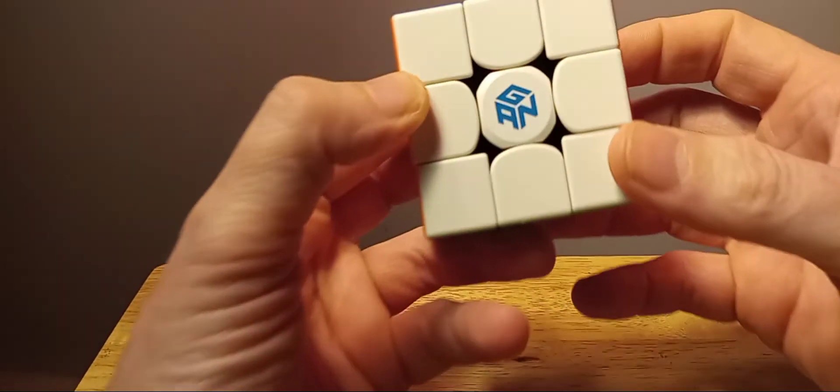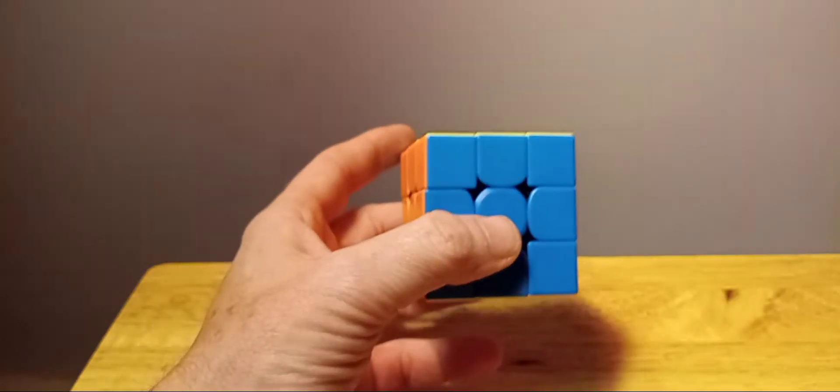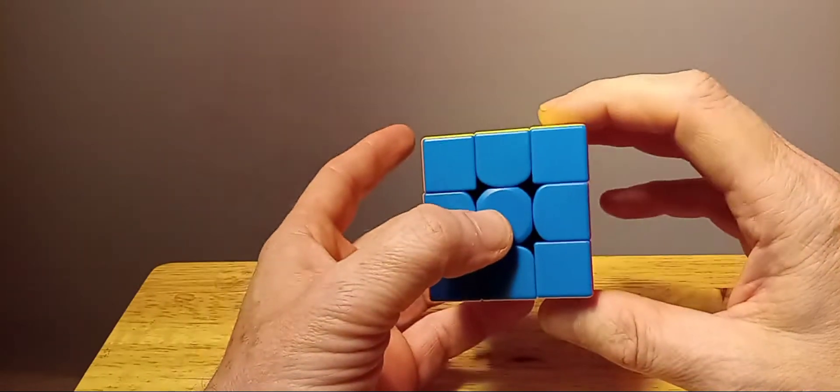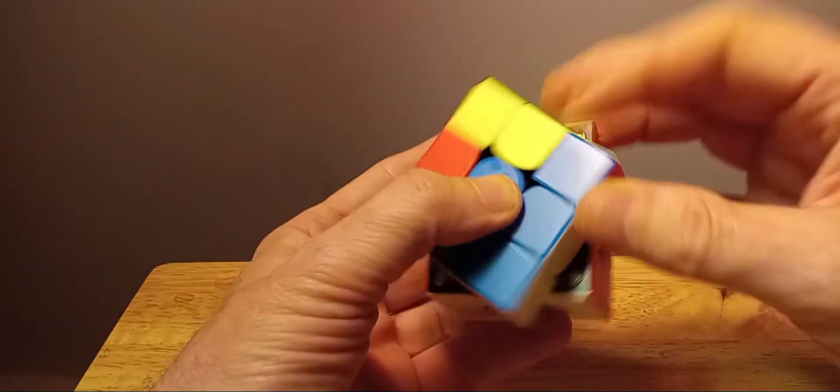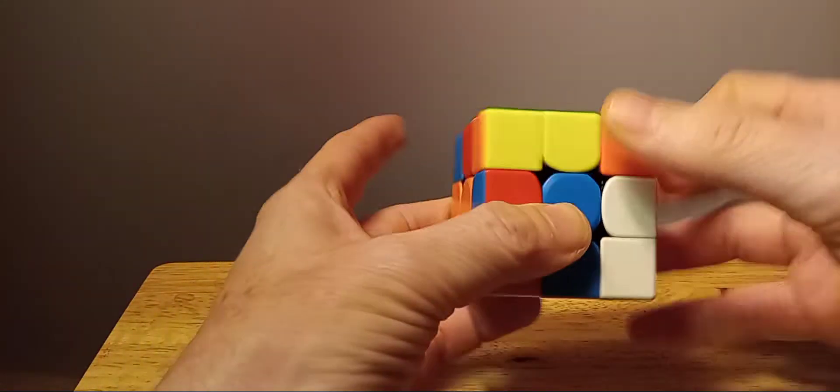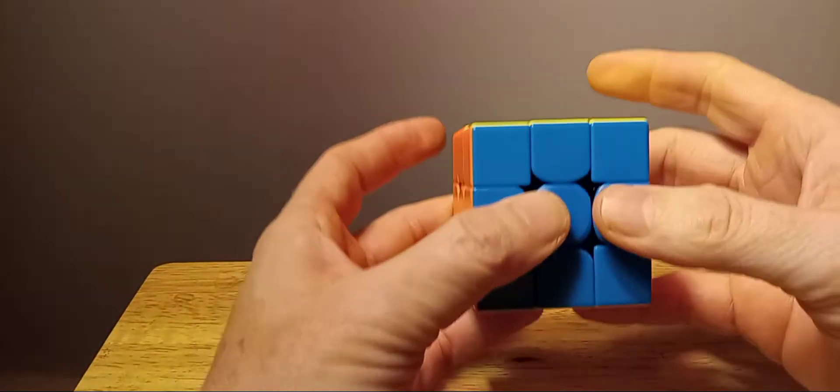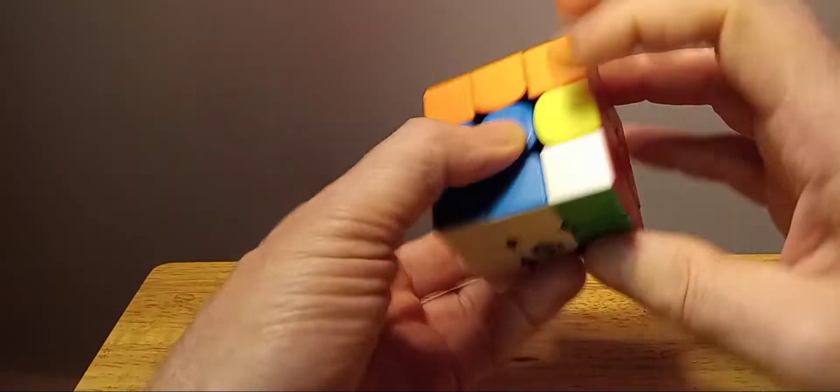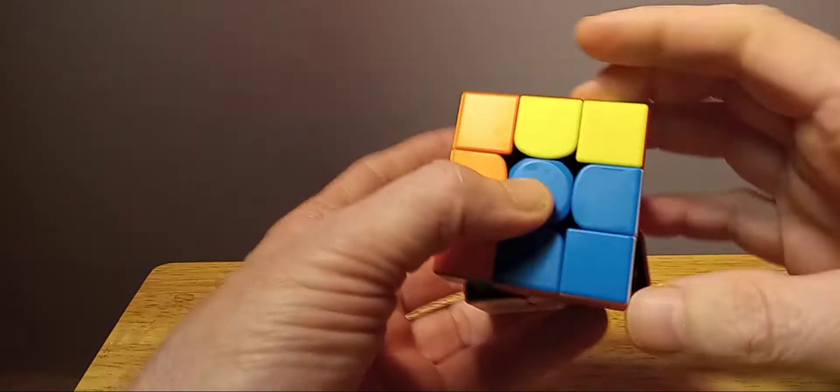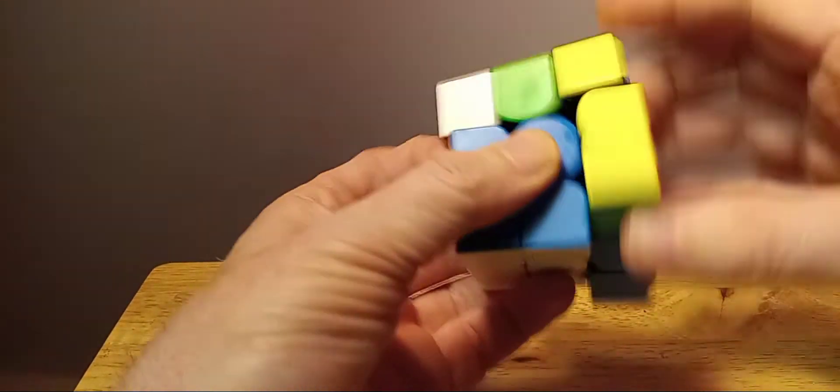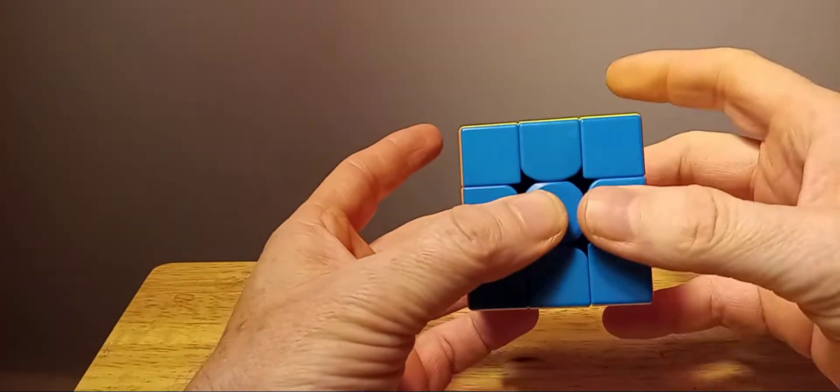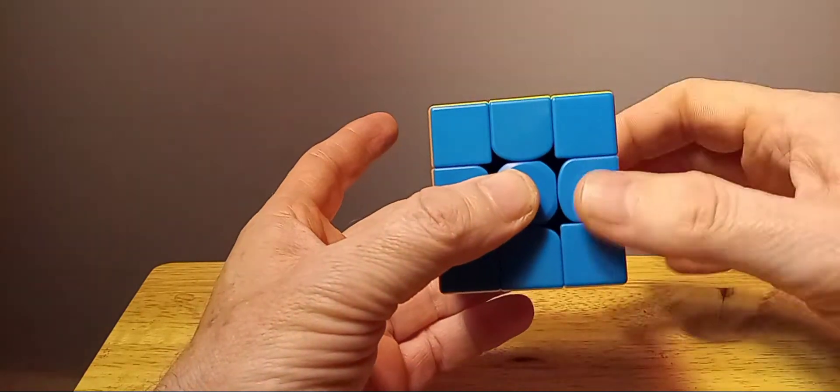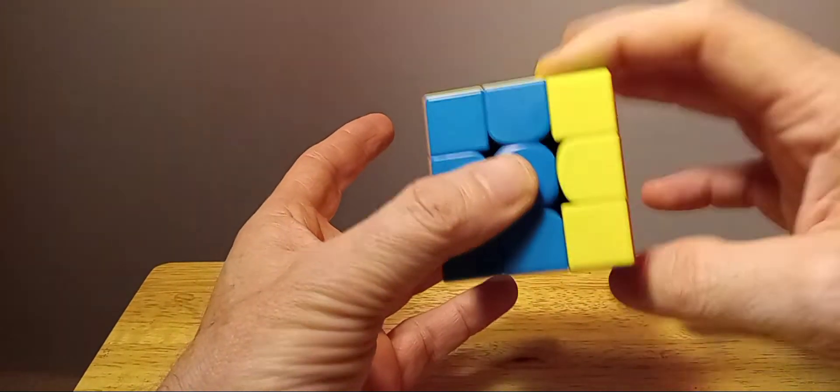So this is the GAN 356 Air Magnetic. And do a few first turns, we'll do a PLL move, see how this moves. It's very solid. It's very solid, I could tell already. Yeah, it's very solid. Magnets are pretty light, actually. I would say they're light to almost medium, something like that. But they fall in place really good.